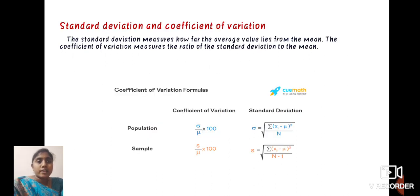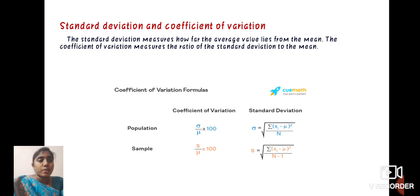Next, we define standard deviation and the coefficient of variation. The standard deviation measures how far the average value lies from the mean. The coefficient of variation measures the ratio of the standard deviation to the mean. For population, the coefficient of variation equals sigma by mu into 100, and the standard deviation formula: sigma equals root of summation of Xi minus mu whole square divided by N. For a sample, the coefficient of variation equals S by mu into 100, and the standard deviation S equals root of summation of Xi minus mu whole square divided by N minus 1.